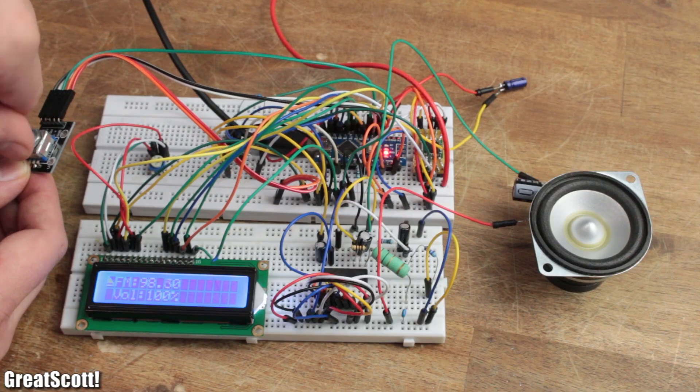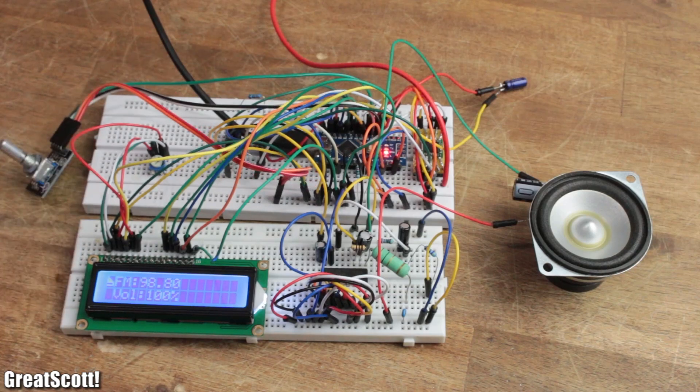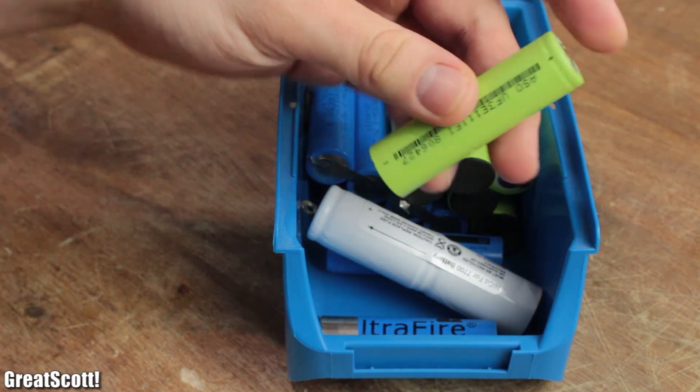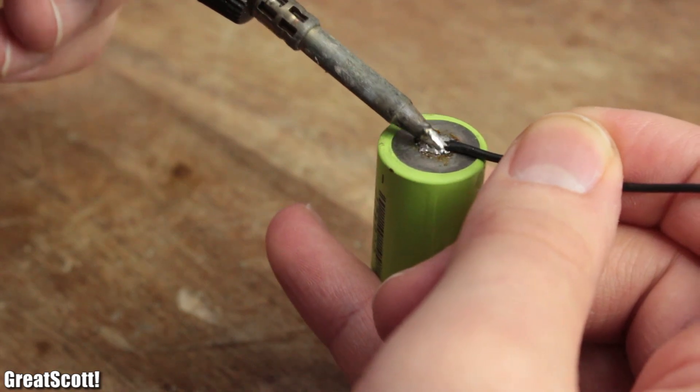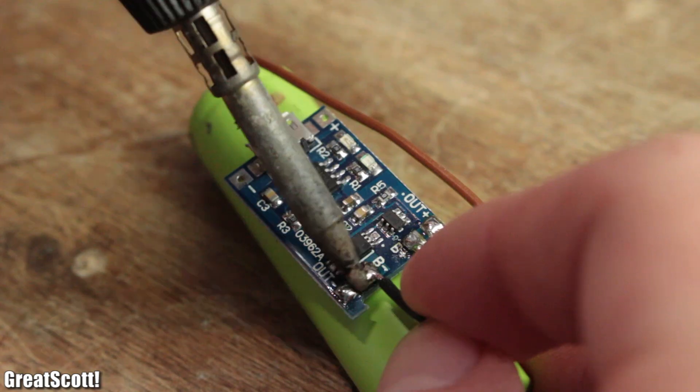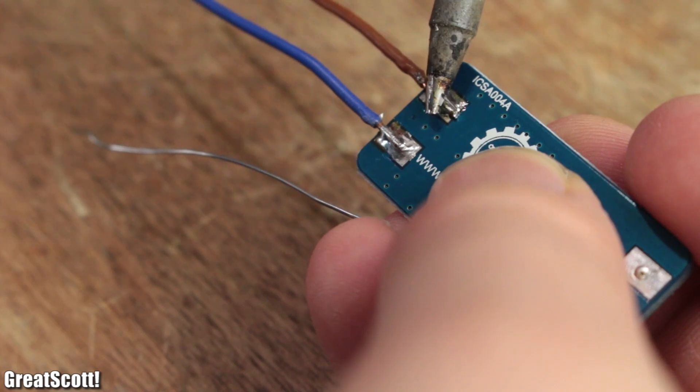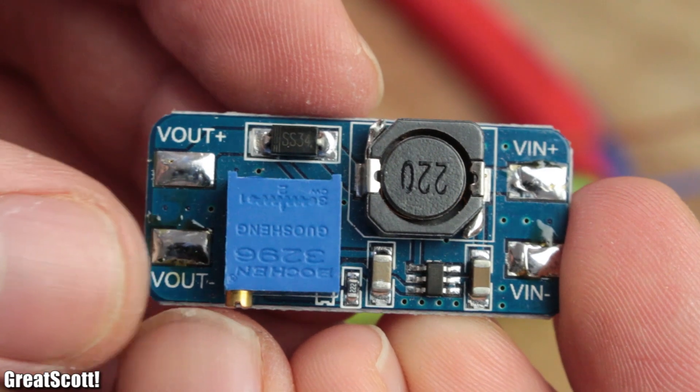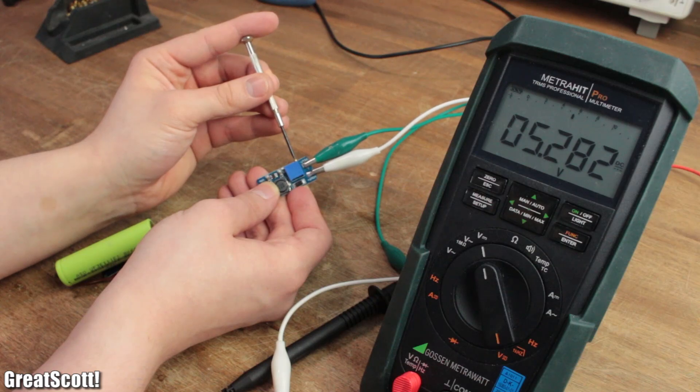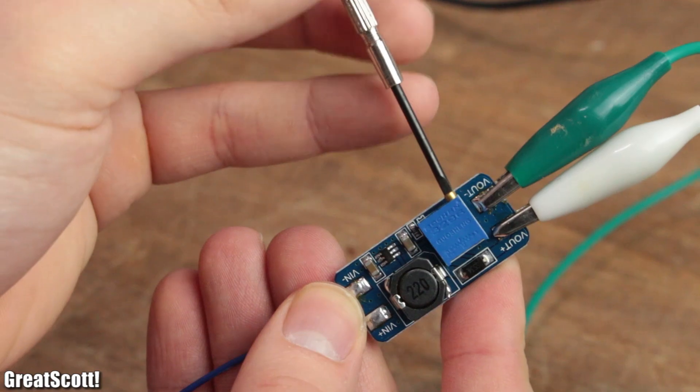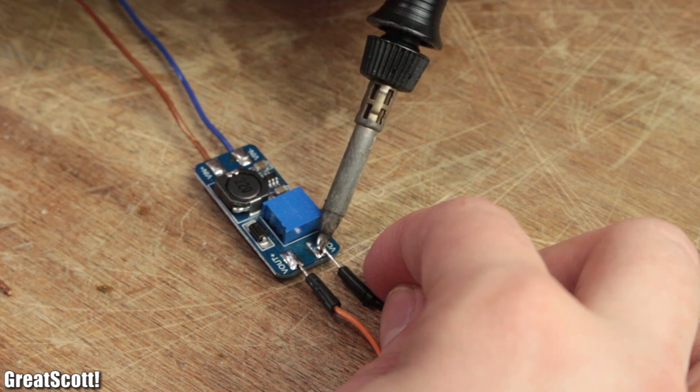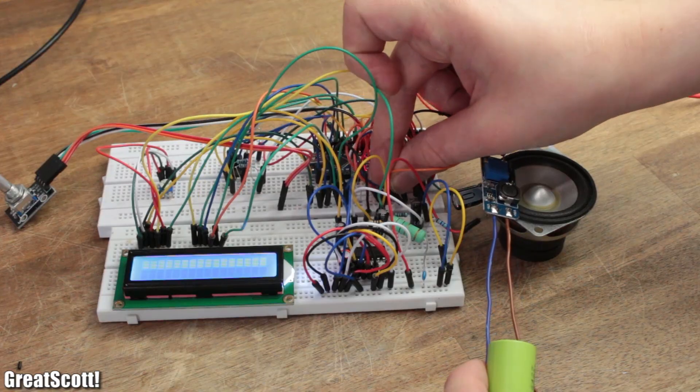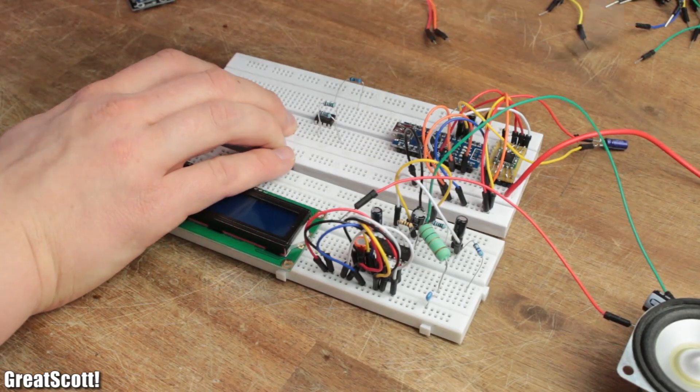But since I don't want to do that, I got myself a lithium-ion cell, hooked it up to a TP4056 charging and protection circuit, and connected its output to a MT3608 voltage booster. Make sure to adjust its output voltage to around 5 volts through its potentiometer before powering the breadboard circuit with it.